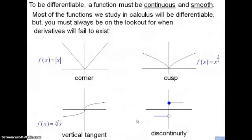And finally, here's a piecewise defined function — a linear piecewise defined function. For all x values less than zero, it acts like the horizontal line negative one. For all x values zero and greater, it acts like y equals one. So this is a jump discontinuity, another case where a function is not differentiable, and the one case shown where it's also not continuous.